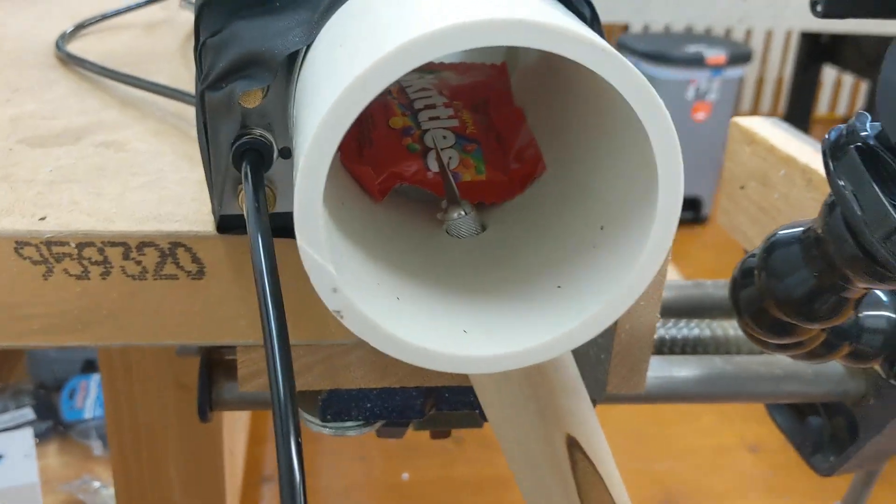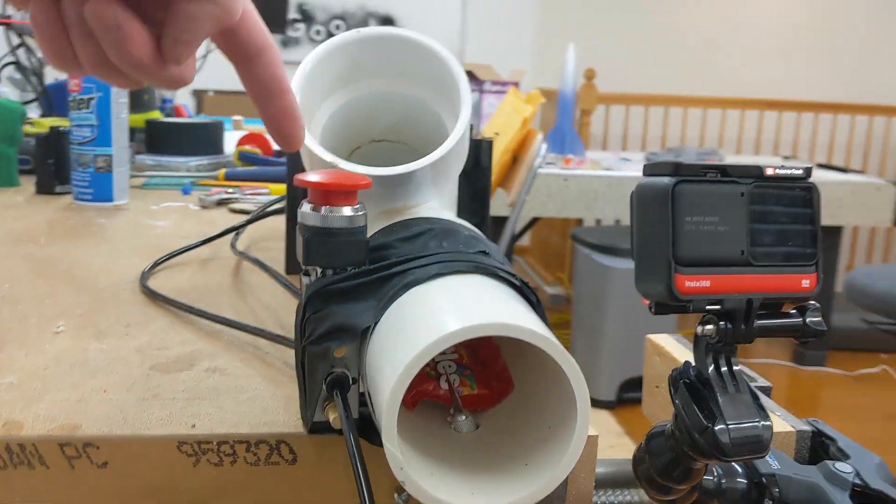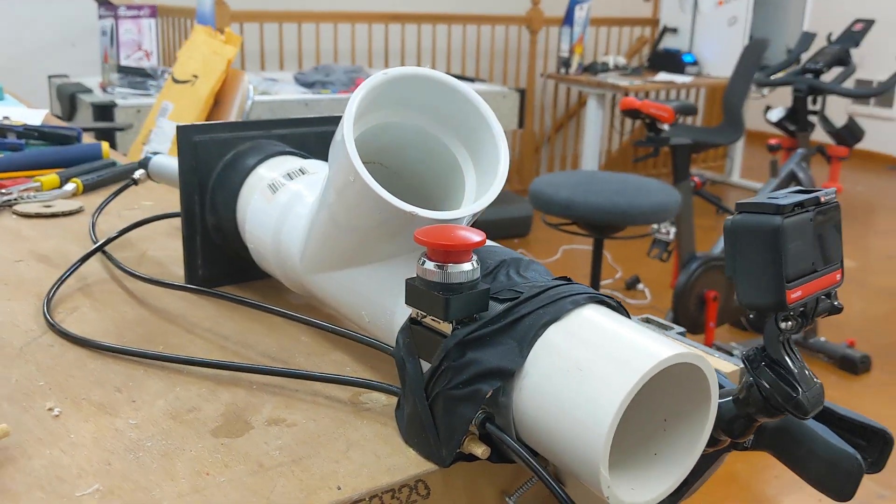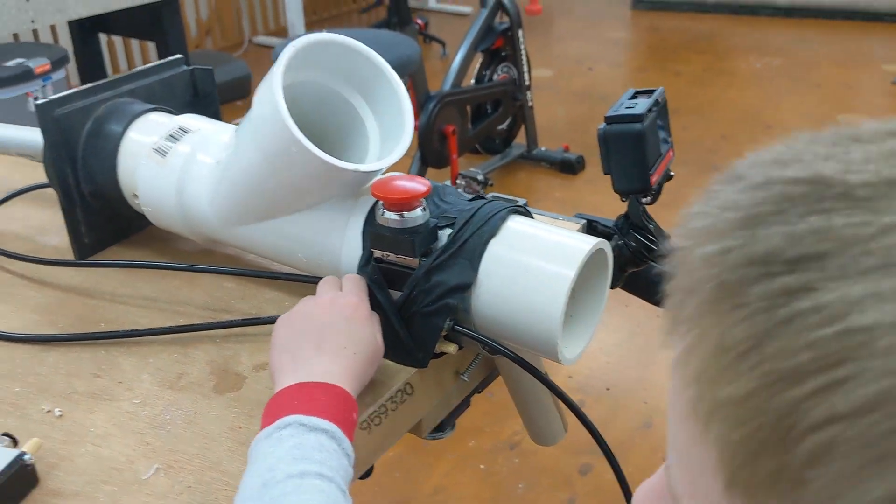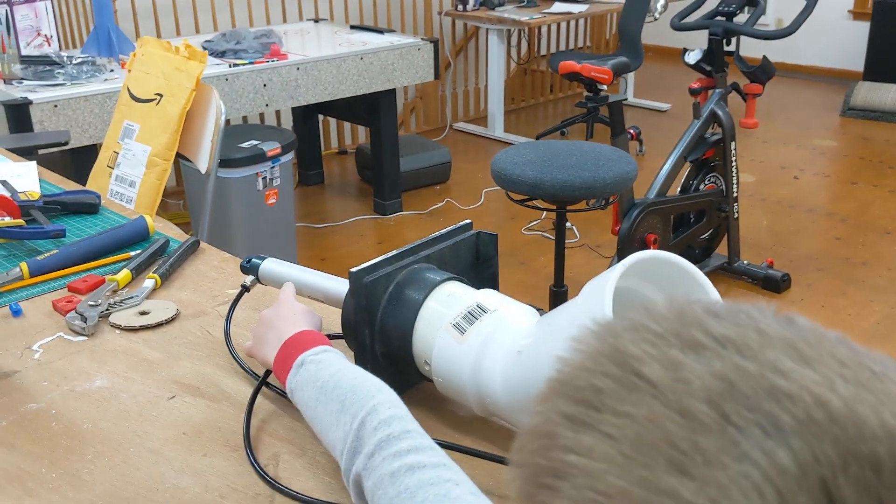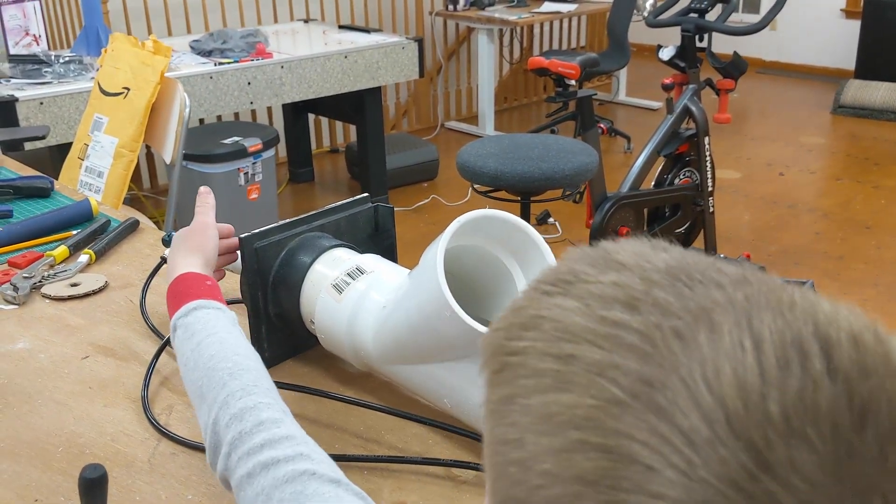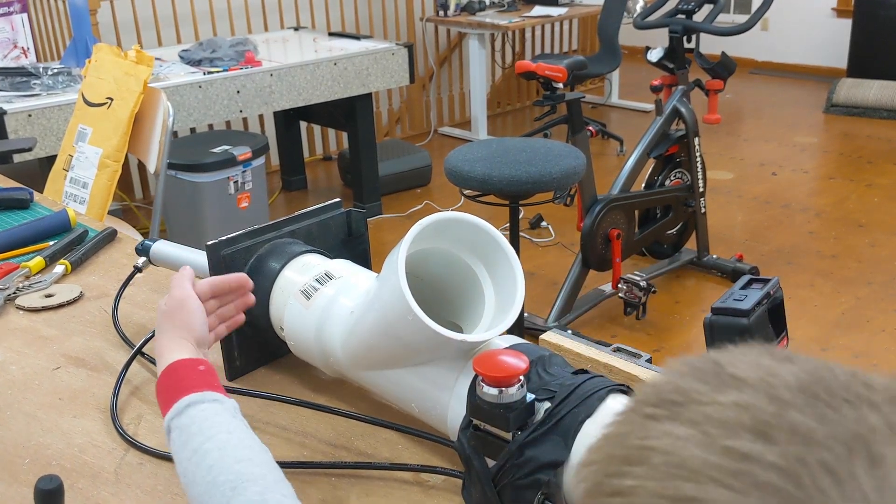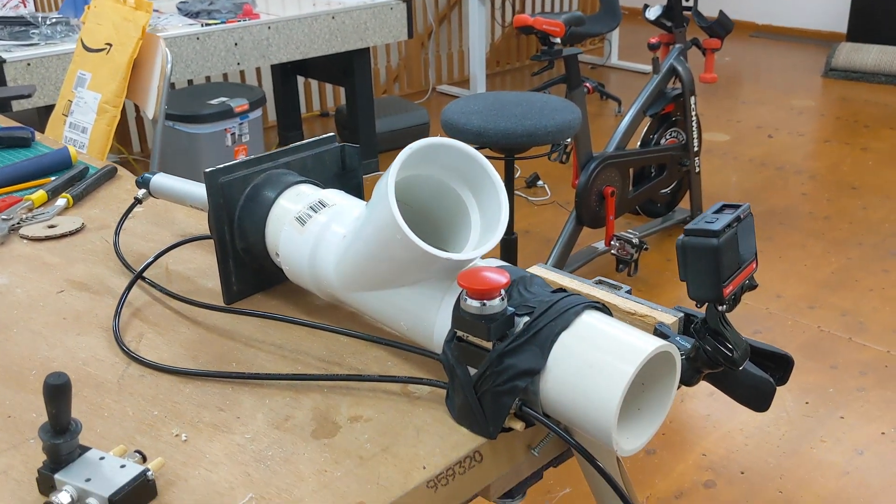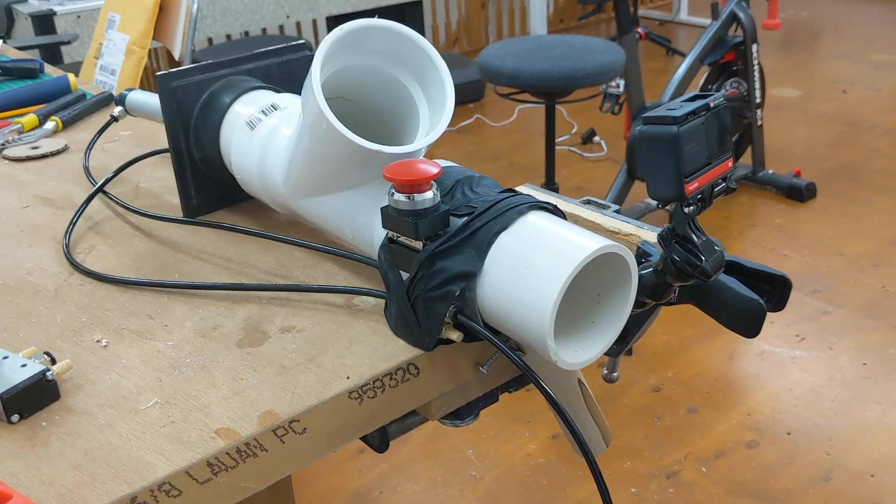In this case we have Skittles, but it cuts the fruit snacks. When you push this, the air goes through this tube and into the pneumatic cylinder, pushes it to here, and makes the fist punch out and shoot the fruit snacks.